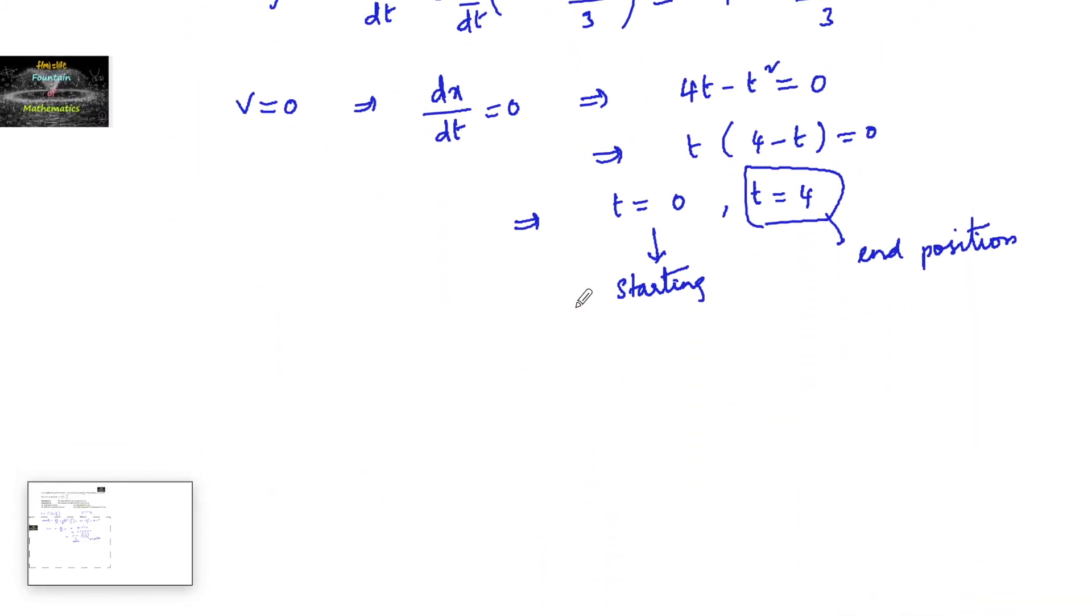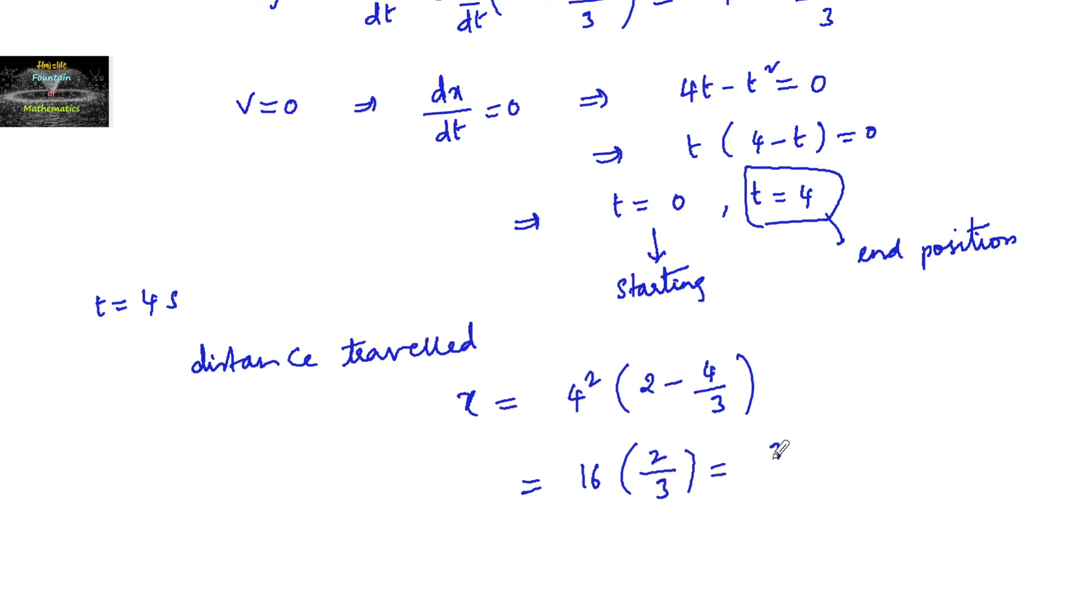So for time t equals 4 seconds, distance traveled is x equals t squared, that is 4 squared, times 2 minus t upon 3, that is 4 minus 4 upon 3, which equals 16 times 2 upon 3, that is 32 upon 3.